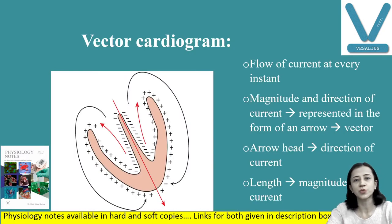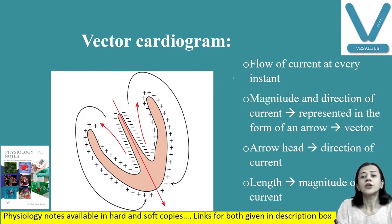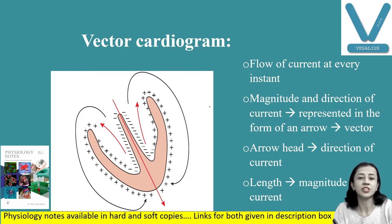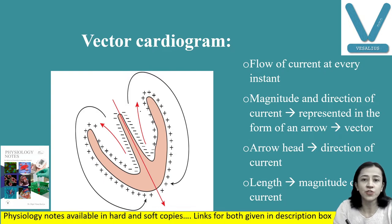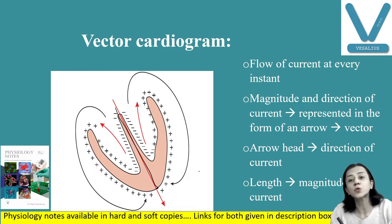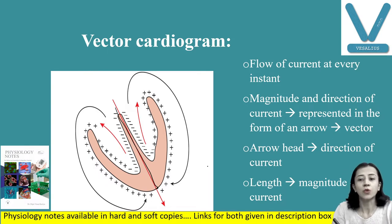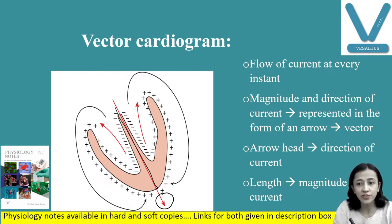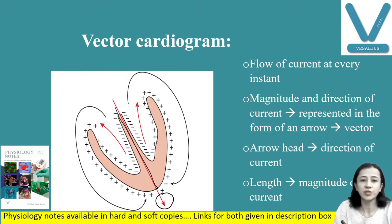Now let us start with today's topic: Vector Cardiogram. Let us first understand the concepts. During depolarization and repolarization, there is a wave of depolarization and repolarization which passes through the heart. There is flow of current at every instant. The direction and magnitude of the current is represented by an arrow, and this arrow is known as a vector. The head of the arrow is pointed towards the direction, and the length of the arrow is directly proportional to the voltage of the potential.